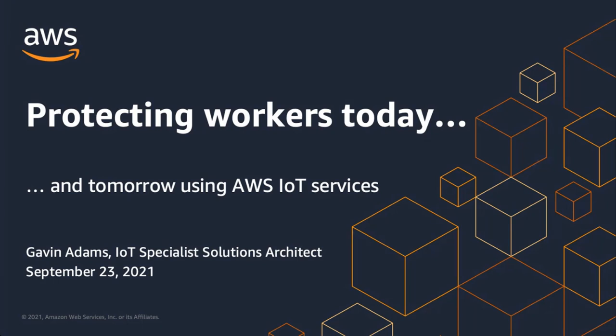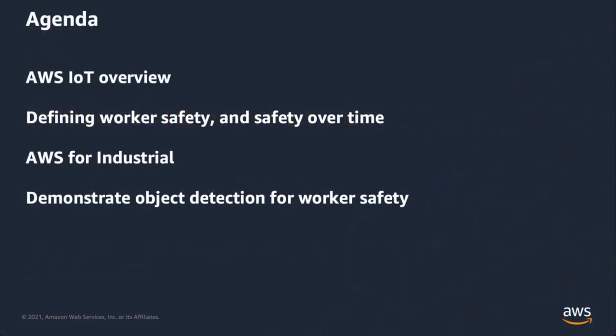When I was thinking about a webinar for protecting workers, that really resonated well. In today's webinar, we're going to cover a few different points. We'll start off with a high-level overview of AWS IoT and some of the services and capabilities it provides. We'll then talk about what worker safety is and how worker safety evolves over time.